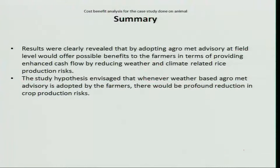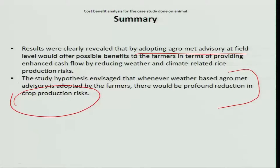Coming to the summary: the results clearly reveal that adopting agro advisories, as indicated in the crop management studies, reduces production risk as well. It benefits the farmers, and similarly, by following agro advisories, animal protection risks or crop protection risks get minimized or reduced. These areas are very important for weather-based agriculture, weather forecasting in agriculture, and agro advisories. Thank you very much.